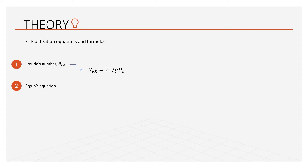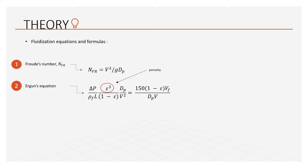The second one is the Ergun equation. This equation states that as the superficial gas velocity increases, the pressure drop across the bed also increases. When the gas velocity is high enough that the drag forces on the particles equal the weight of the particles, the bed becomes fluidized. By using this equation, the pressure drop across a fixed bed can be calculated. The porosity from the equation can be defined as the fraction of void bed volume over the total bed volume. At the onset of fluidization, the pressure drop across the bed equals the net effective weight of the bed per unit area of cross section.